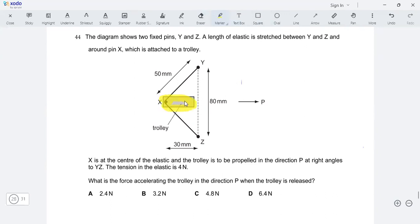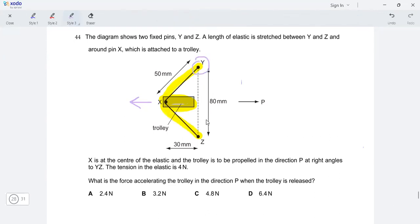So this is a trolley and the trolley is basically being pulled back through this elastic string. And this elastic spring or string, it's basically connected to these three pins, Y, Z, and X. The trolley is then finally released. And what would happen if the trolley is released, it will start moving in the forward direction in the direction of P. This is what's happening.